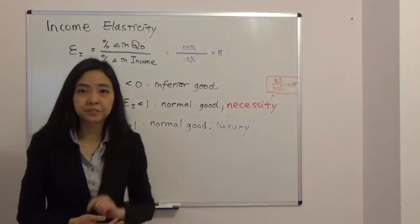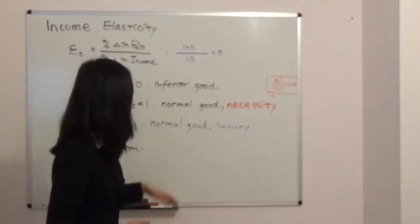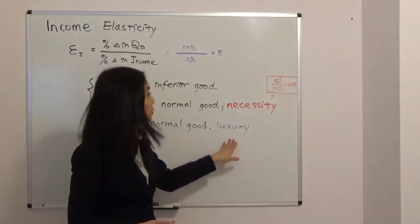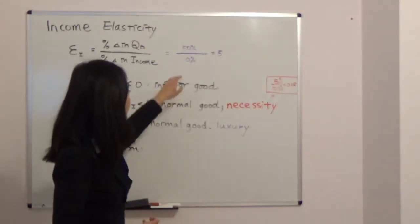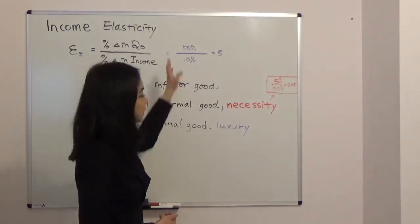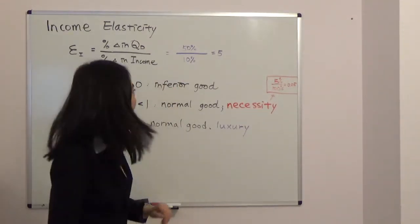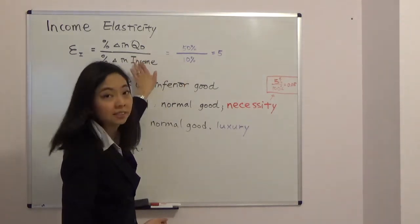And if your income elasticity is greater than one, then the good is a luxury. So for example, if you get a 10% raise and you take Caribbean cruises 50% more, then Caribbean cruises income elasticity is equal to five and that tells you it's a luxury.